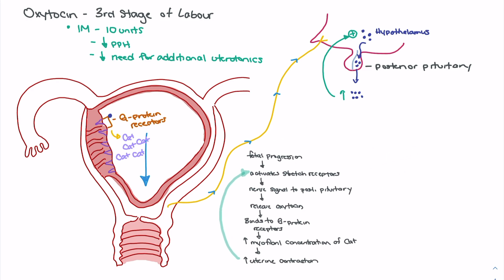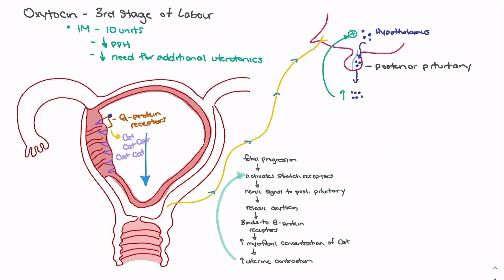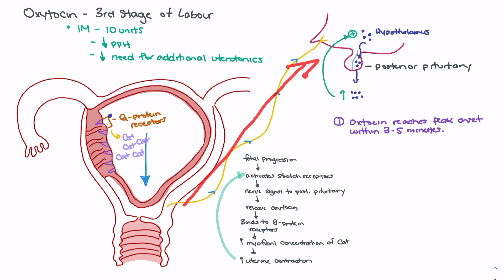Now we can look at why administration of an exogenous bolus of oxytocin during the third stage of labor may be effective to prevent postpartum hemorrhage and the need for additional uterotonics. Two key pharmacokinetic points: first, oxytocin will reach peak onset within three to five minutes, meaning within that window we'll start to see strong uterine contraction and triggering of the positive feedback loop. Second, oxytocin has a duration of action of approximately two to three hours.